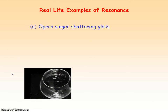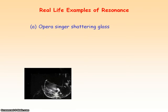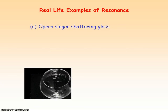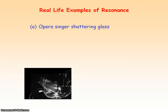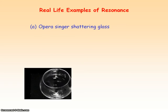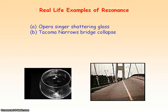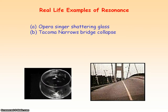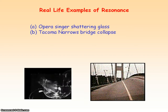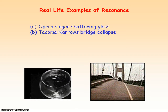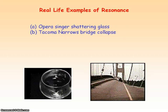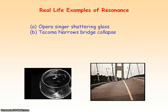An example of resonance is an opera singer shattering glass. The opera singer forces the glass to oscillate, and if the note produced matches the natural frequency of the glass, the glass oscillates with maximum amplitude such that it shatters. Another example is the Tacoma Narrows Bridge Collapse, where strong winds forced the suspension bridge to oscillate at its natural frequency, causing maximum amplitude oscillation.